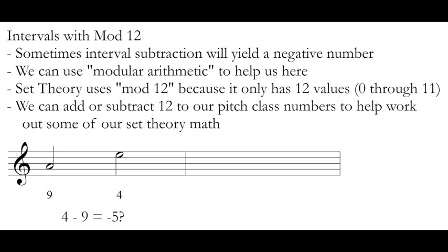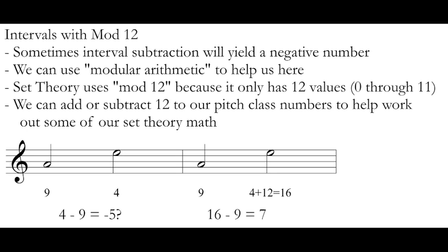Whenever we're doing math with set theory, we can add or subtract 12 to our pitch class numbers to help work through some of our set theory math. This is like adding an octave to something. 4 minus 9 isn't a math problem that gives us a good answer. But we can add 12 to 4 using mod 12 and make it 16. And 16 minus 9 does give us an answer that makes sense. It tells us that the pitch class interval between A and E is 7.